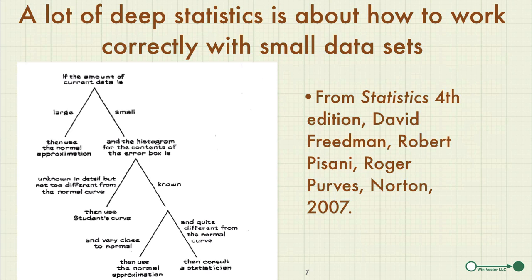Also, a lot of deep and difficult statistics is actually about how to work correctly in the presence of small data sets. This example from 'Statistics, Fourth Edition' shows a decision tree for when to call a statistician — the punchline being only when you go very deep into the tree, encounter unusual situations, and your data set is small. These are reasons why data scientists can effectively work without detailed domain-specific models and without handling all of statistics every time they approach a problem.